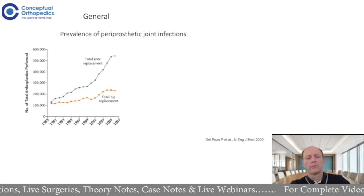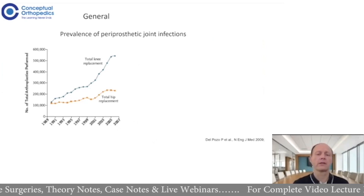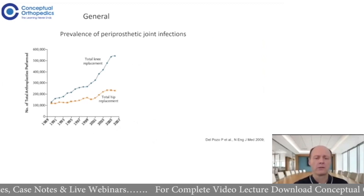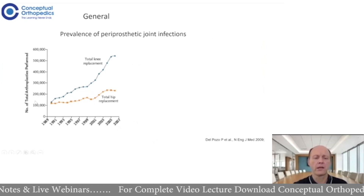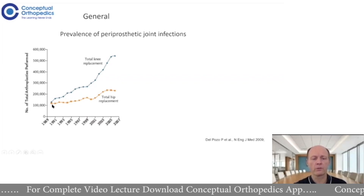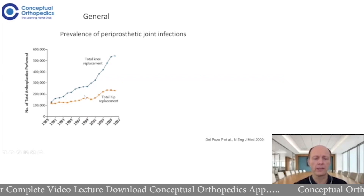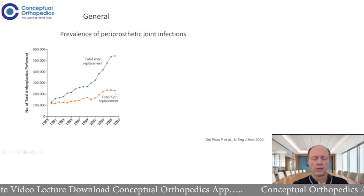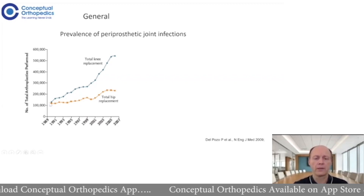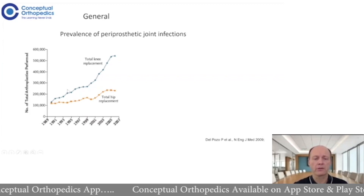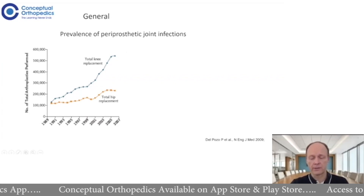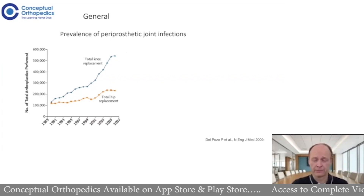A bit on prevalence — first the general numbers. These are US numbers. Total hip arthroplasty increased from around 100,000 in the 90s to double that, around 200,000, almost 20 years later. The knee at that time also started at 100,000 and rose to more than 500,000 in 2007, with numbers further increasing in recent years.